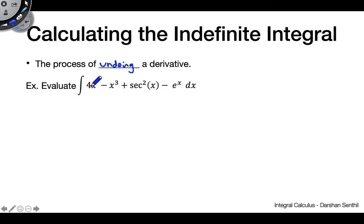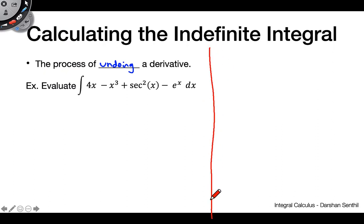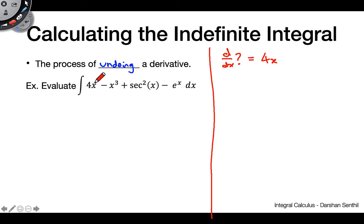Let's try this out. We want to find the antiderivative, or indefinite integral, of this function. Let's look at it piece by piece. Fundamentally, we are asking ourselves: the derivative of what function is equal to 4x? So, 4x is a polynomial — a first-order polynomial — and when we work with polynomials, we use the power rule. Let's think about how we might use the power rule to get 4x.